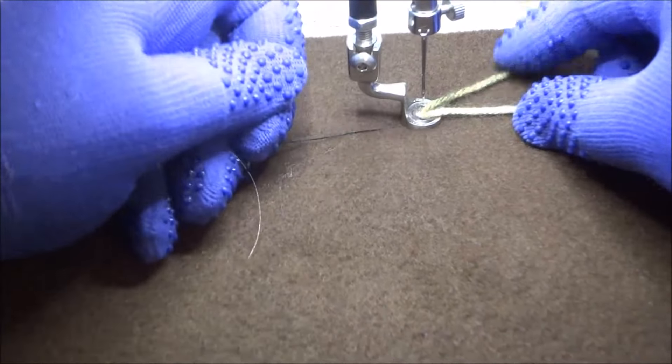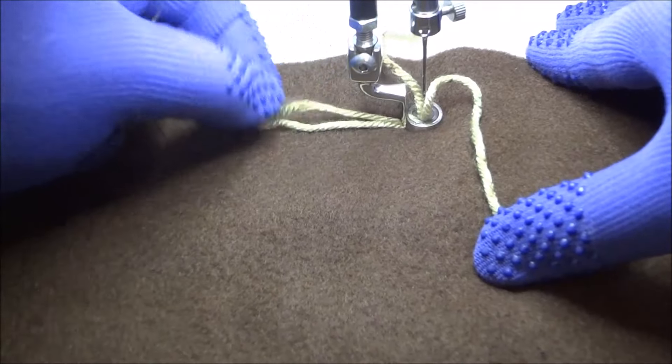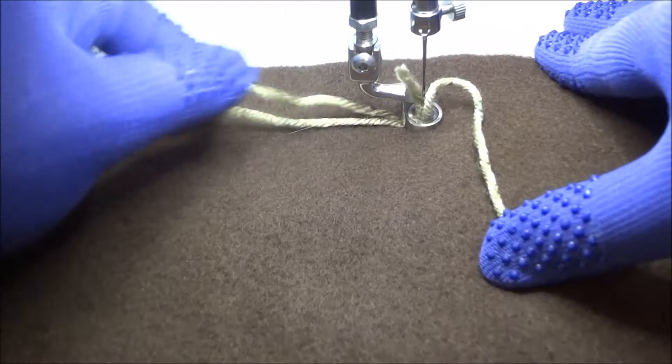Now holding on to your upper thread, you just simply pull. And that lassoed yarn comes right through the hole.